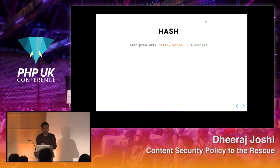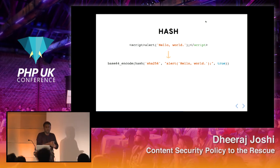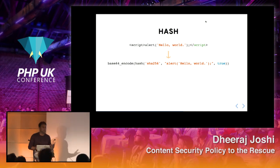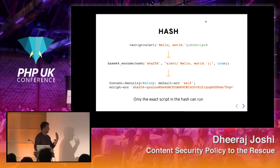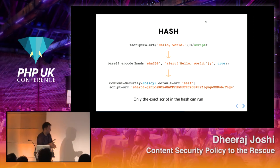When using a hash, you take a script like 'alert' and do a base64 encoding of the script content using a SHA algorithm — SHA-256, SHA-384, or SHA-512. That base64-encoded value goes in the header, and it would allow only that exact script to run in the browser. No other scripts would be allowed to execute.